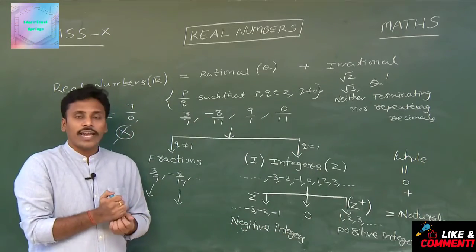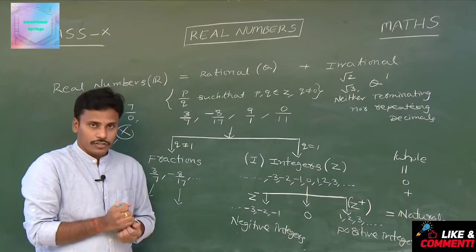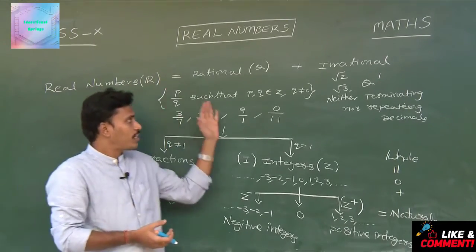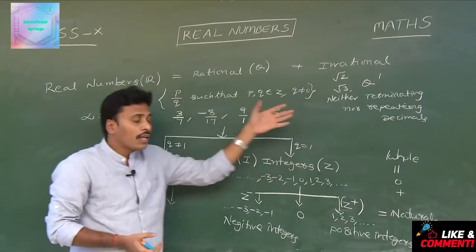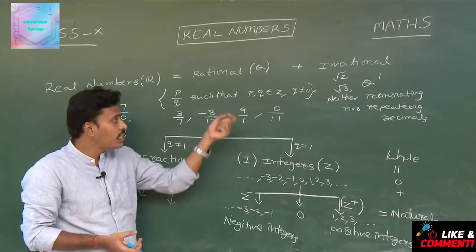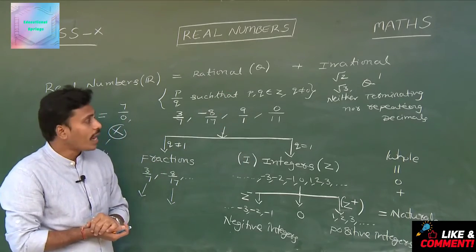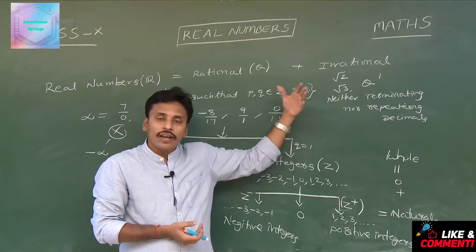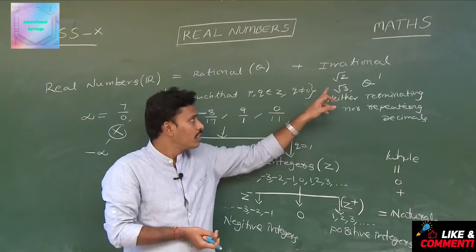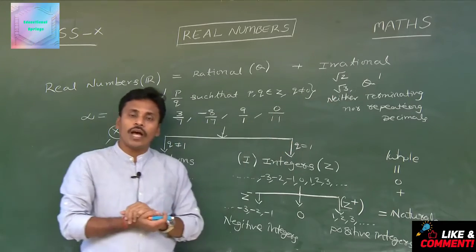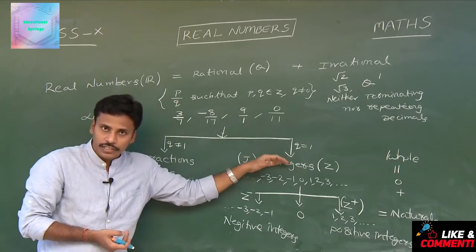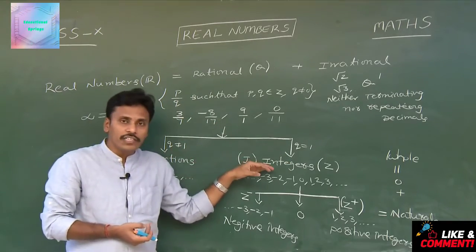This is the complete classification of number systems. Real numbers are a union of both rationals and irrationals. The form of rationals is P by Q such that P and Q are integers and Q is not equal to 0. These rationals are classified as integers and fractions.